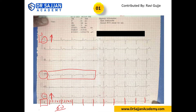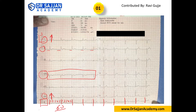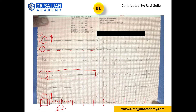Coming to P wave morphology, which is seen in lead two. Looking here, we cannot see any P wave — no P wave, or only a slight P wave is present. This could suggest a junctional rhythm, but we will not conclude that because we have two P waves. From a level one perspective, the P wave looks normal.